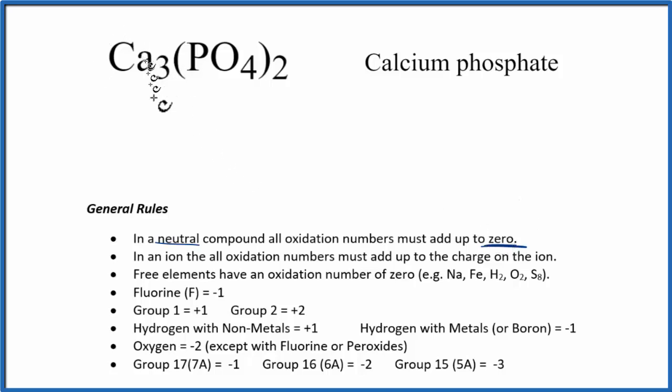Next, if we look at calcium, that's in group 2 on the periodic table. Elements in group 2 have a plus 2 oxidation number.